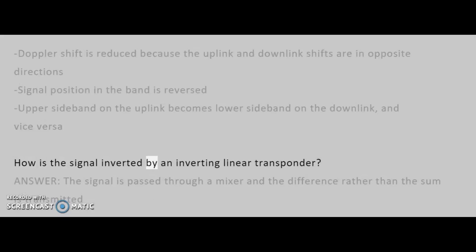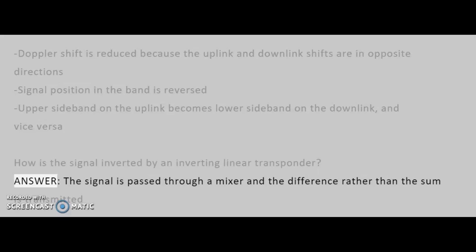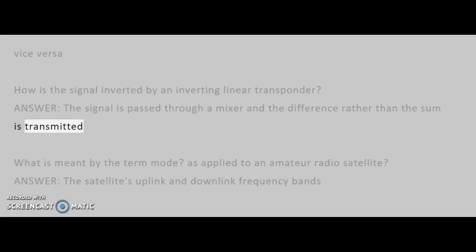How is the signal inverted by an inverting linear transponder? Answer: The signal is passed through a mixer and the difference rather than the sum is transmitted.